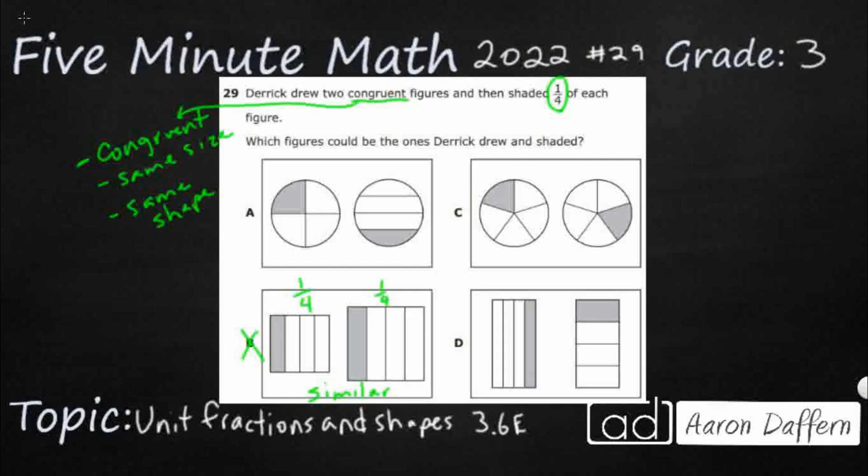Now, if we're not really paying attention, we could get fooled by A. So let's take a look at A. A is pretty standard, at least this one on the left. We've got a circle. We've got four parts, so that means we're dealing with fourths. One part is shaded, so one-fourth.